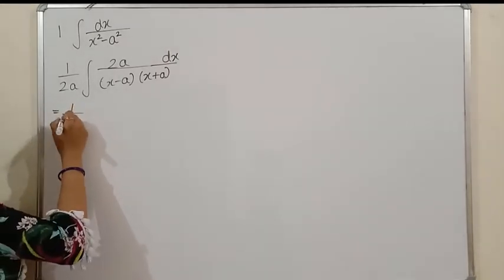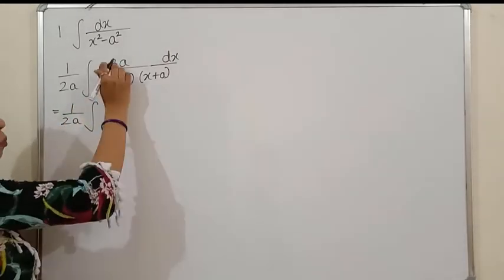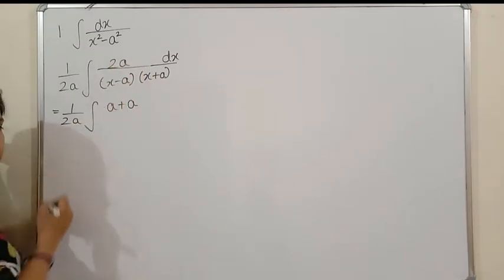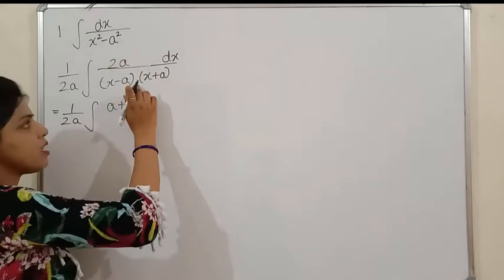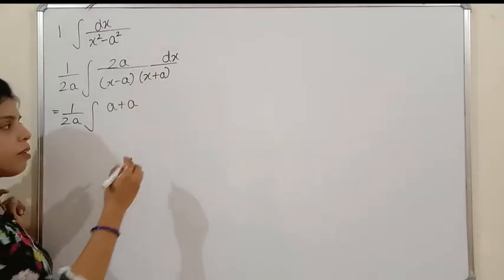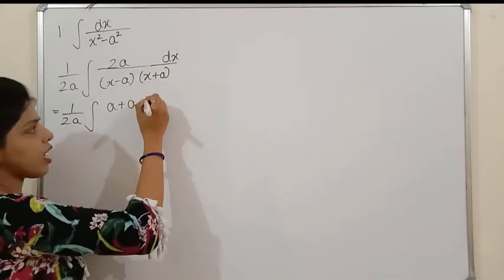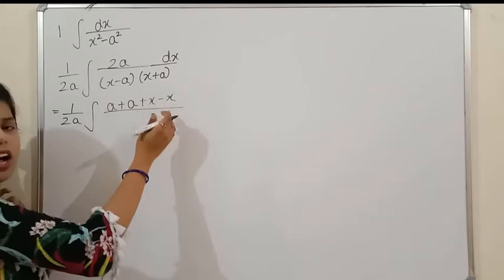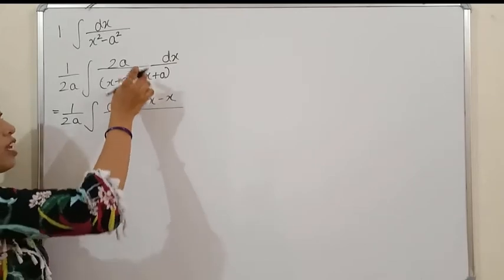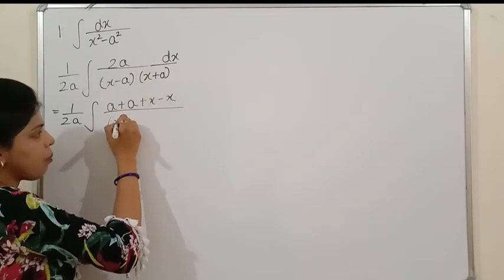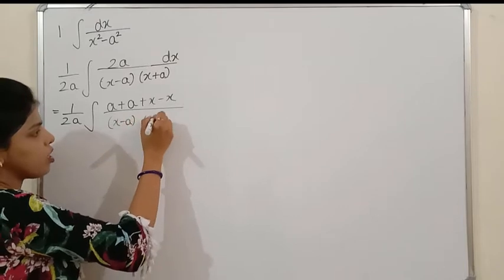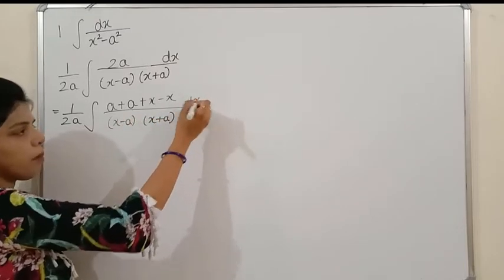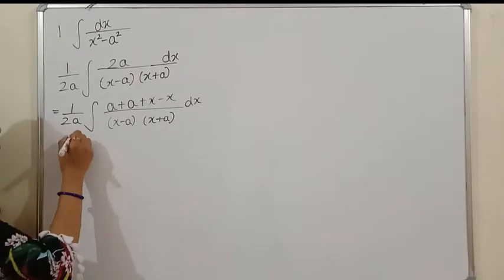Next, split 2a into (a+a), and then add x and subtract x to form the terms (x+a) and (a-x). We can do that — after this step, simplifying the integration of the function becomes very easy.